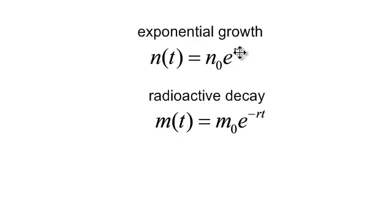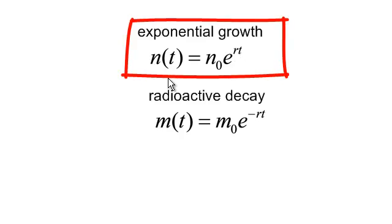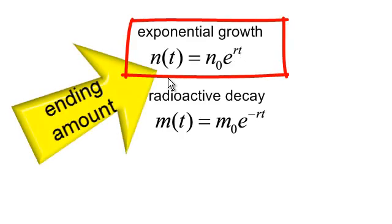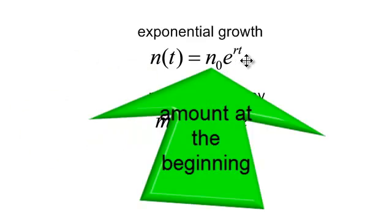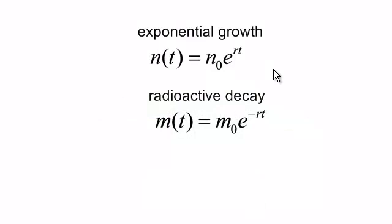So exponential growth, N at t, the amount of something you're going to have at the end is going to equal N-naught, which is the amount you're starting with, times E to the Rt. But once again, this R is some rate of growth, or sometimes we call it K, some people call it B.